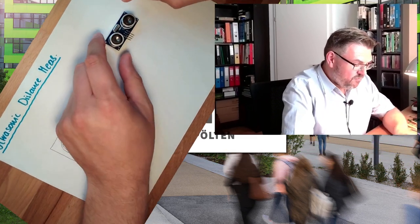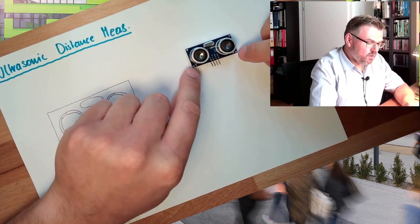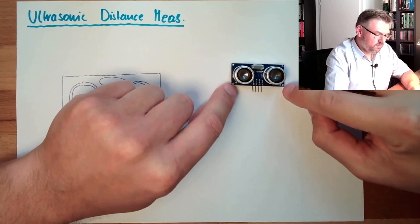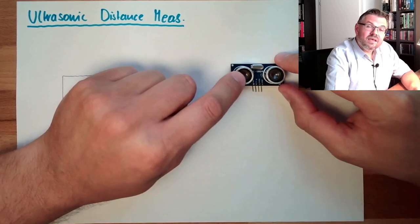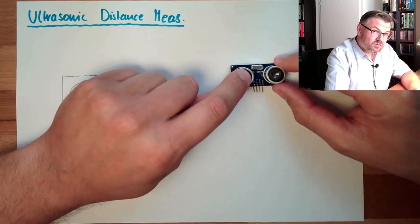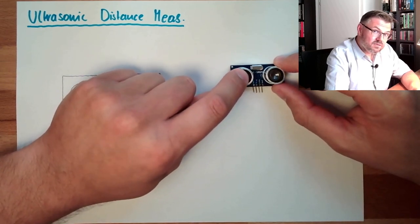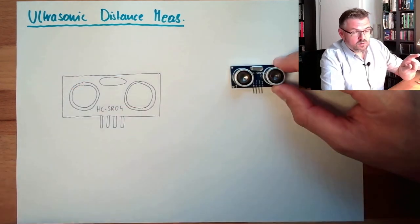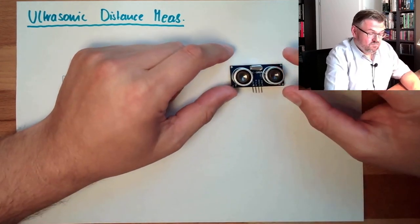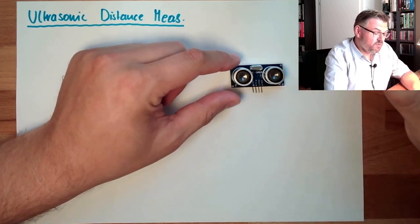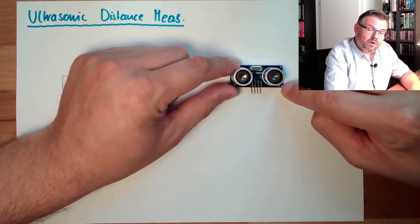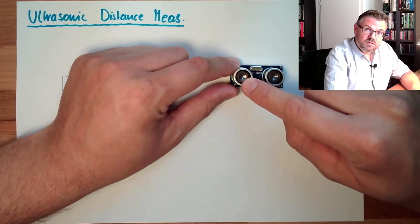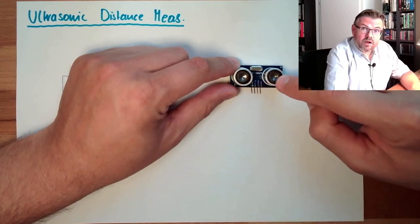How is this working? We have one receiver, we have one transmitter, marked with T and R. The transmitter is issuing an ultrasonic sound impulse. This will travel away, hit some surface, this will be reflected and received by the receiver. This is a loudspeaker, this is a microphone.